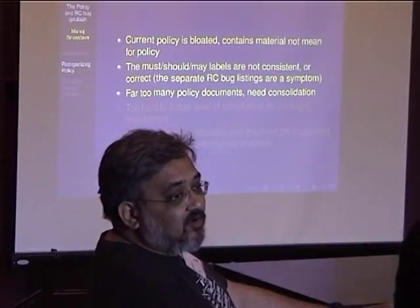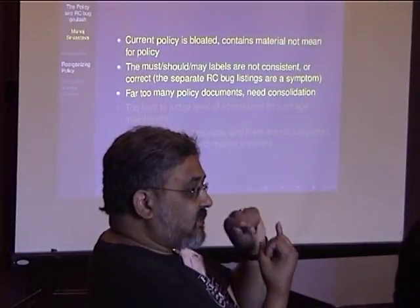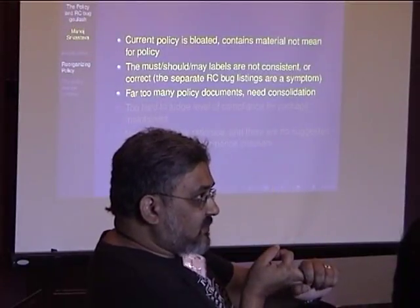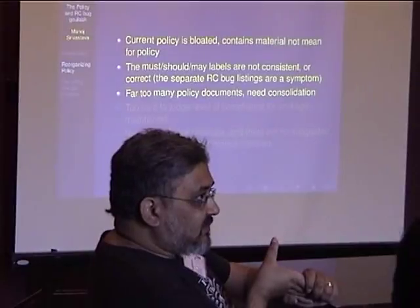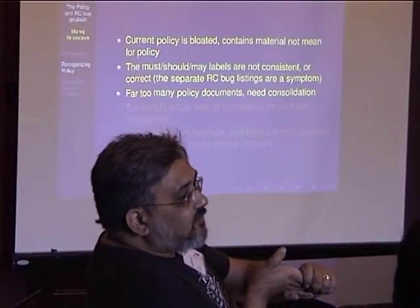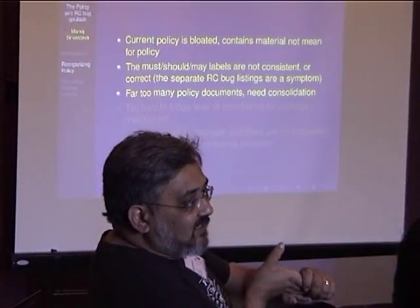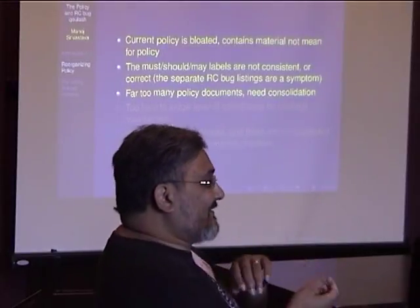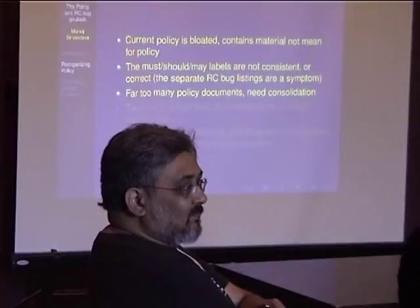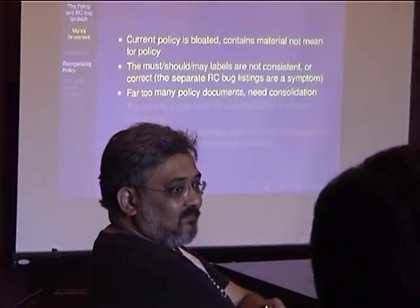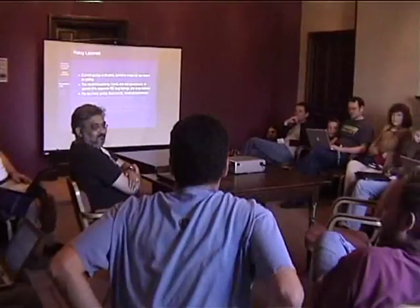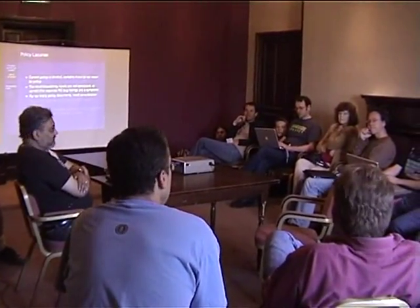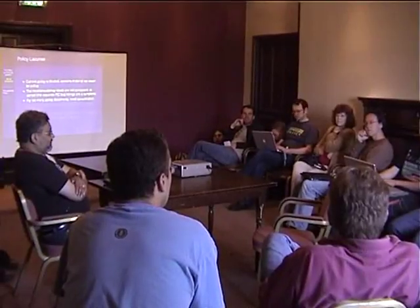At this point I have no idea how many policy documents there are. I know there is the Perl policy, the X.org policy, the menu policy, an Emacs policy. There ought to be a Python policy but there isn't really. There is a Pan policy, a Kerberos policy, a web policy, a TeX policy, and an R policy, among a couple of others. And none of these seem to be migrating into the main Debian policy package the way they used to.